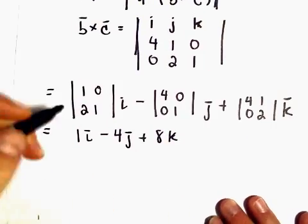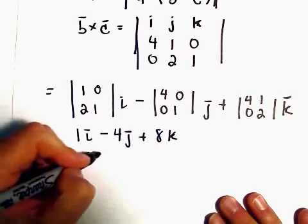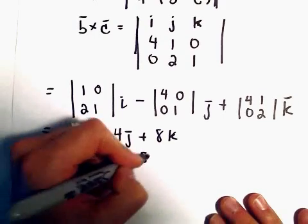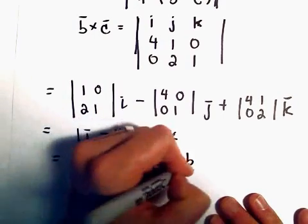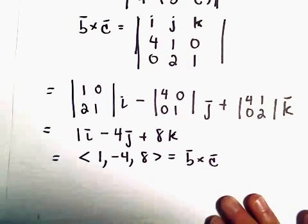So it looks like B cross C just has components 1, -4, and 8.